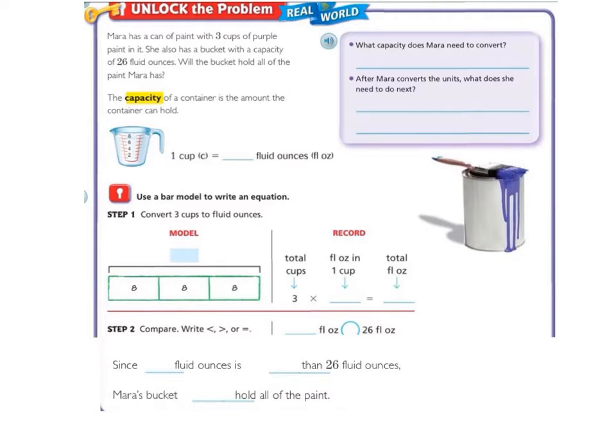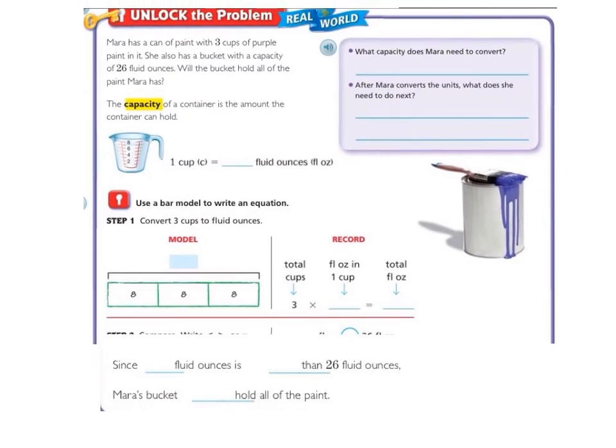Let's look over at our purple box. It says, what capacity does Mara need to convert? Well, Mara has 3 cups of purple paint, and we want to know if that paint can fit into a bucket that can hold 26 fluid ounces. So we need to convert 3 cups to fluid ounces.